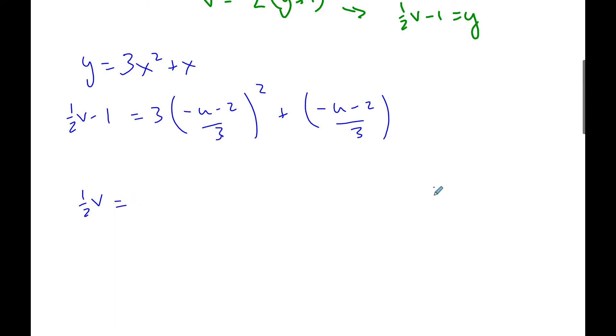I'm going to keep this one half. I will add 1 to this side, moving it over. This negative, I can factor it out, square it and it goes away. And so it's going to be 3 times u plus 2 over 9 squared. And then it's going to be minus u over 3 minus 2 thirds plus 1.